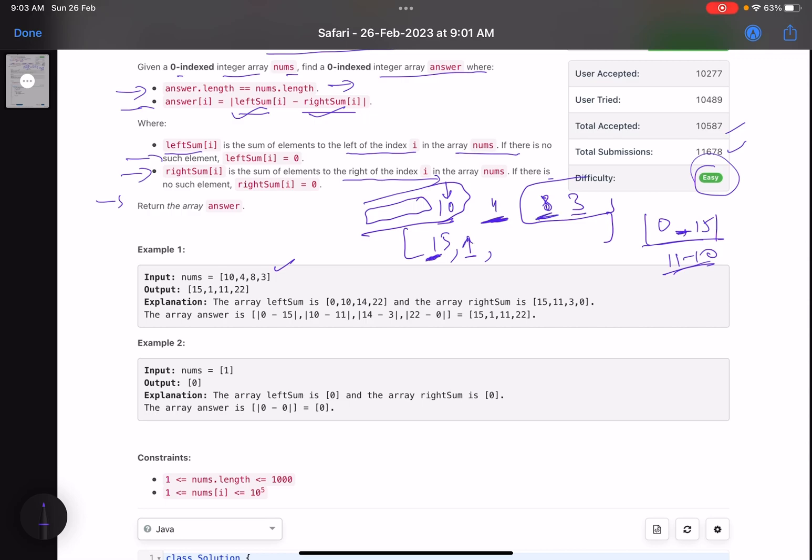Similarly, when you come to this position, the left sum is 10 plus 4, that is 14. Right sum is 3. So the absolute value is 11. And then you come to this position. What is sum of these values? It is 22. And what about the right hand side? Right hand side, you don't have any element, right? Because you can't include 3 here. So that is 0. 22. And this is your answer. This is what the problem is trying to say.